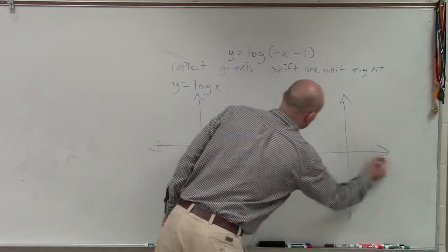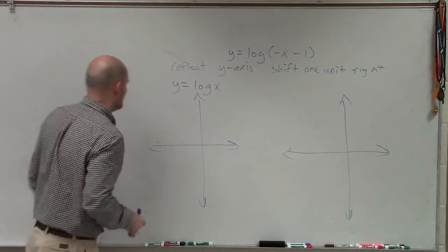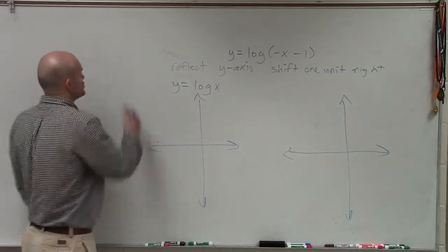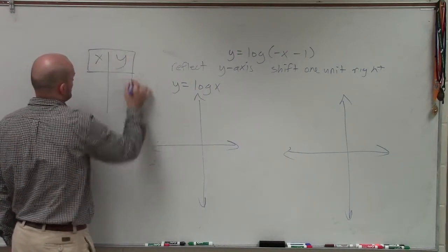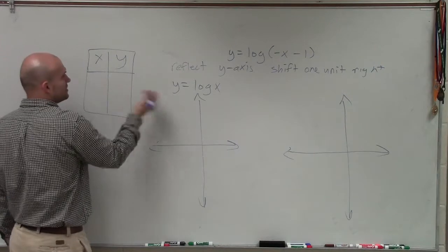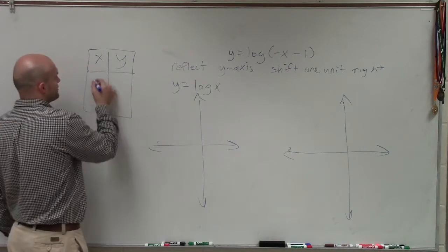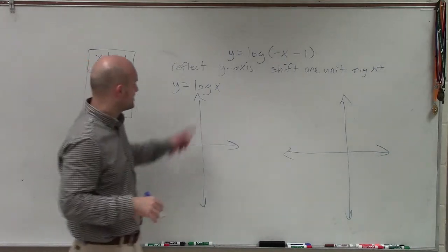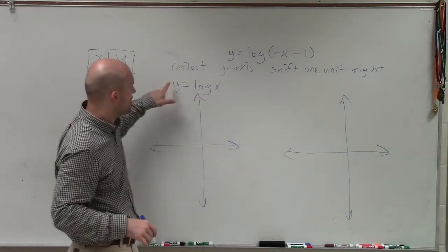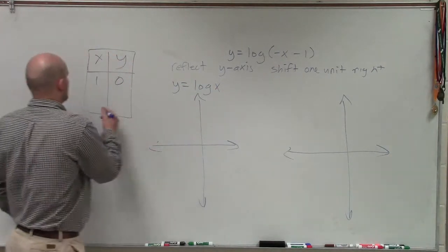So in graphing our parent graph, we can just choose some values that we like for our x and our y. So if I choose x equals 1, we know y is going to equal 0, right? Because 10 raised to what power is going to equal 1? Well, we know y would equal 0.